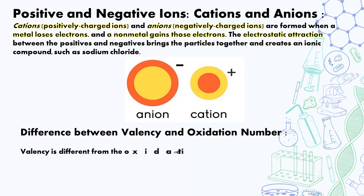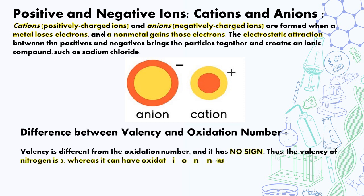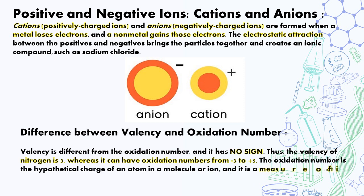Difference between the valencies and the oxidation number. Valency is different from oxidation number and has no sign. Thus valency of nitrogen is 3, whereas it can have oxidation number minus 3 or plus 5. Oxidation number is the hypothetical charge of an atom in a molecule or ion and it is a measure of its apparent capacity to gain or lose electrons within that sphere.